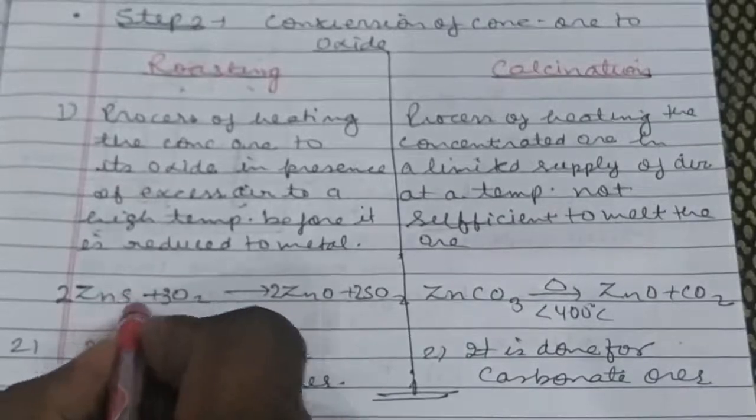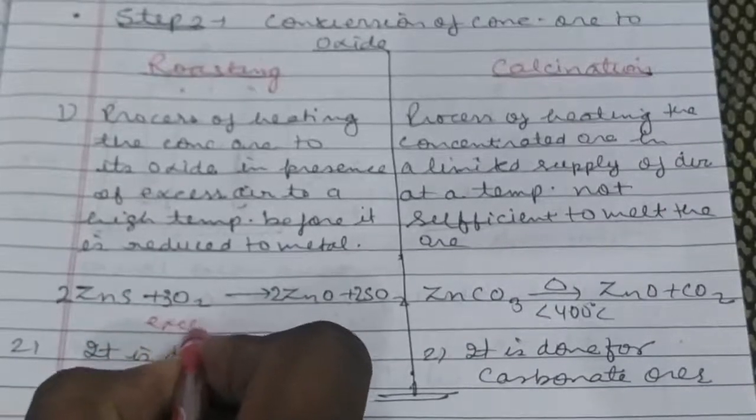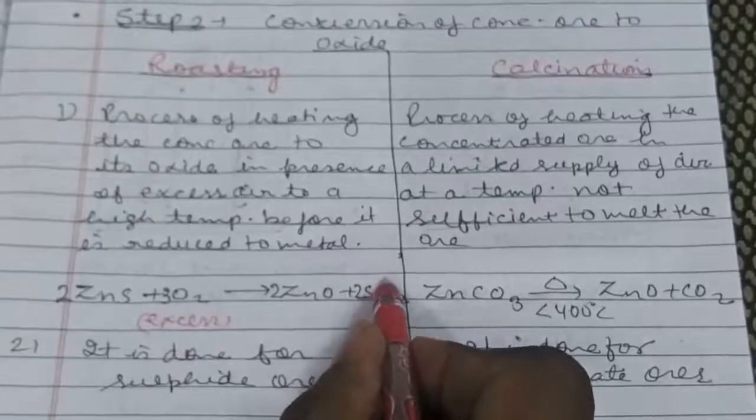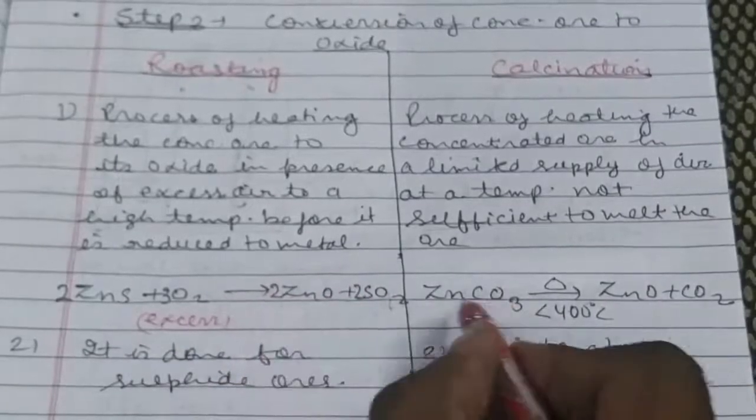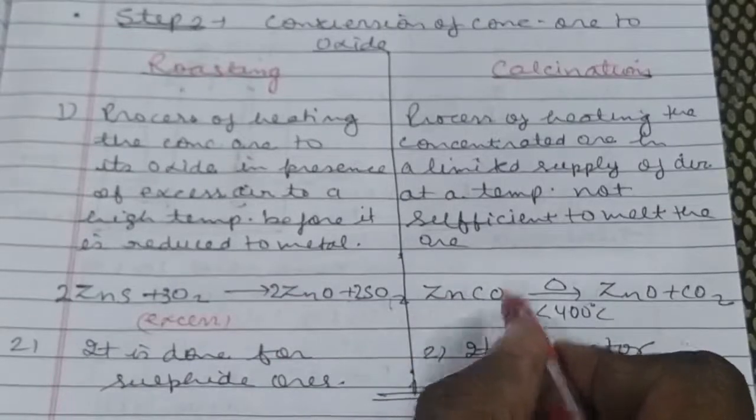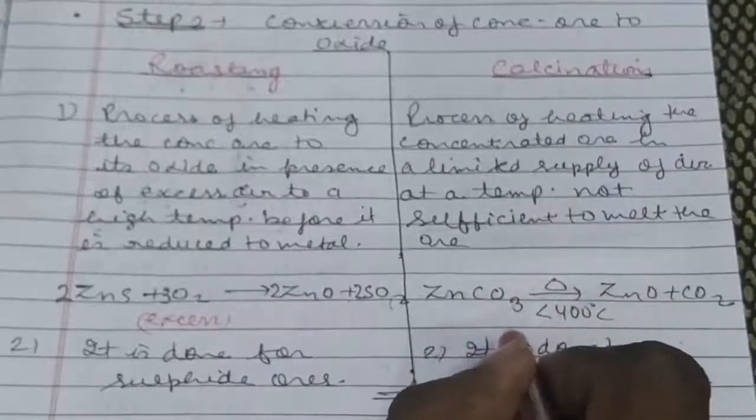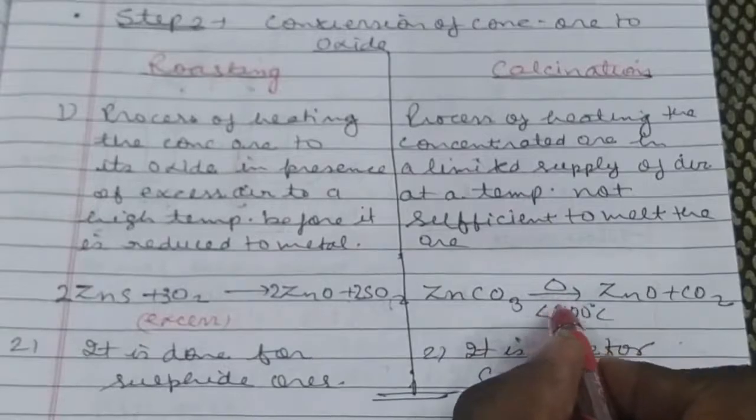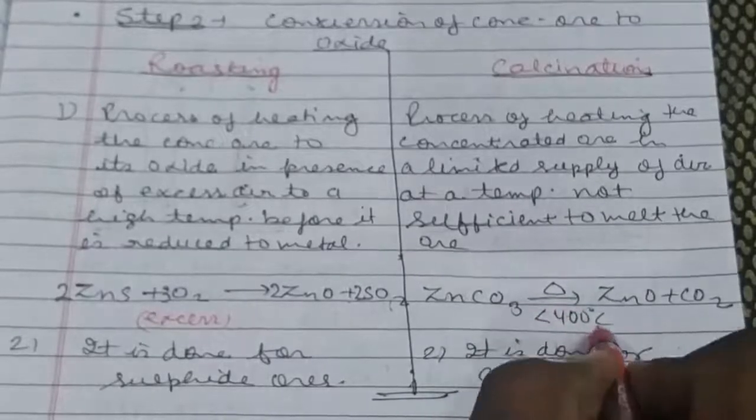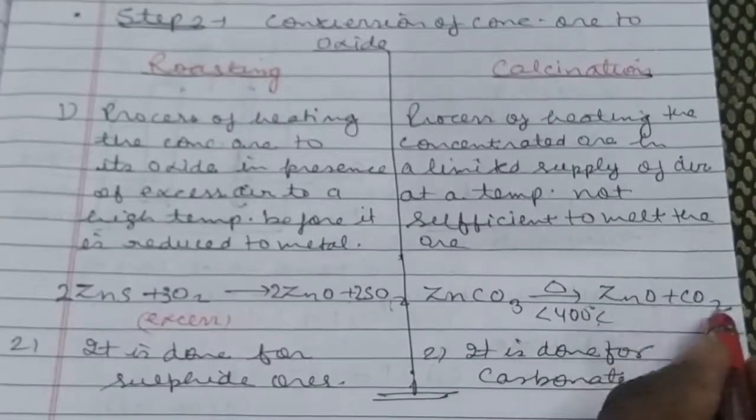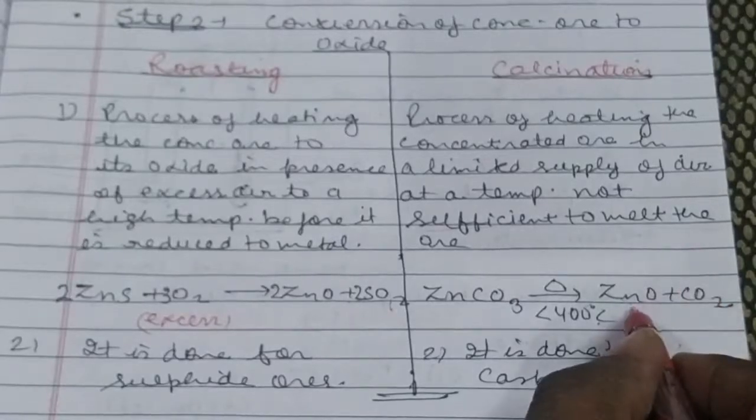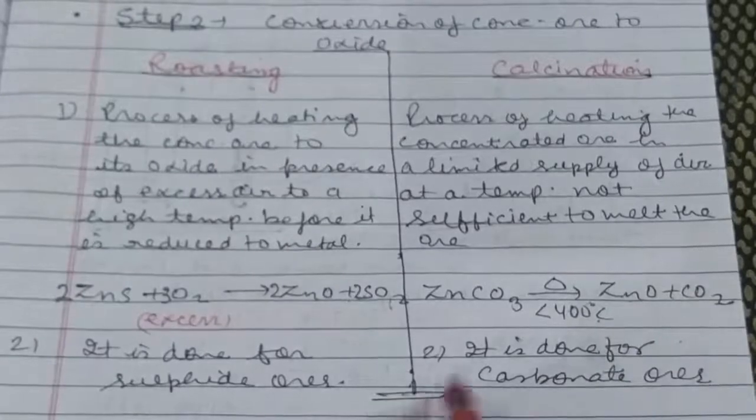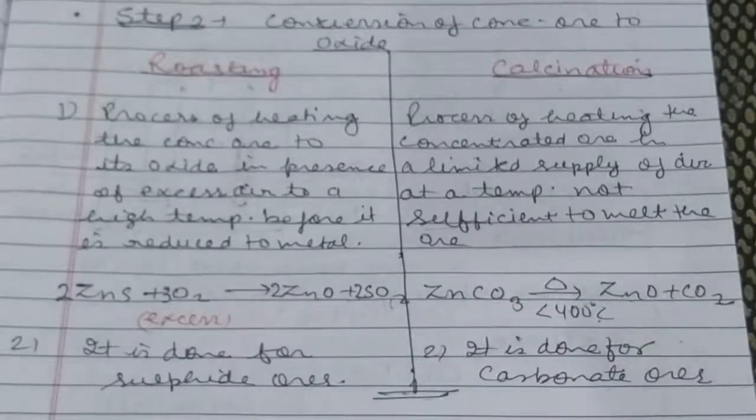In this, you have to heat zinc sulphide in presence of excess air to form sulphur dioxide gas. It will remove out leaving behind zinc oxide. So by this way, you can see that we can get zinc oxide from concentrated ore.